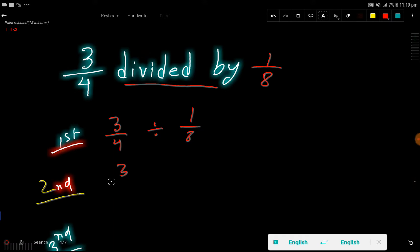Then in the second step, I will change this division sign to a multiplication sign and take the reciprocal of this fraction. So the reciprocal of the fraction is 8 over 1. That is, you have to interchange the position of numerator and denominator.